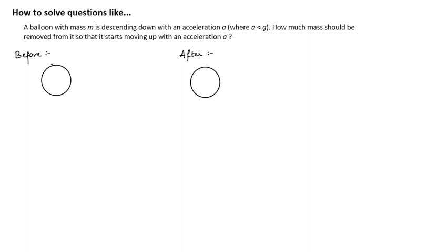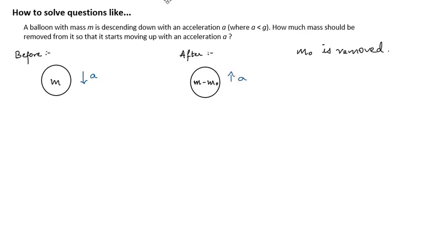Let's visualize this first. Before removing the mass, the mass of the balloon was m, and after removing the mass, the mass will be m minus something. Let's say m₀ mass is removed, so m minus m₀ is the final mass of the balloon. It was first moving down with an acceleration a, and after removing the mass it starts moving up with an acceleration a.